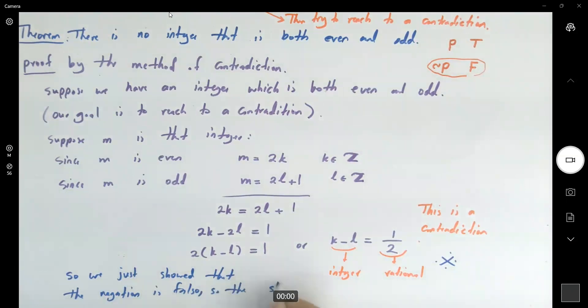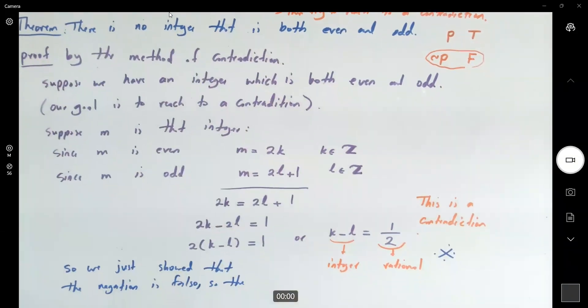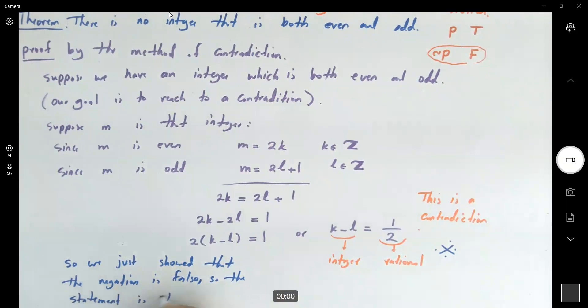So the statement, the original statement that you had at the beginning is true. So we just proved this theorem by the method of contradiction.